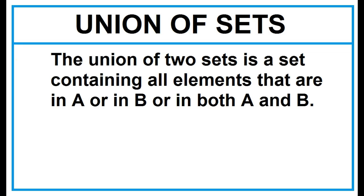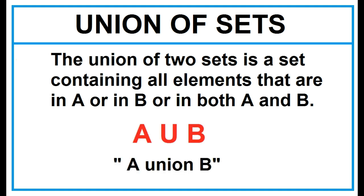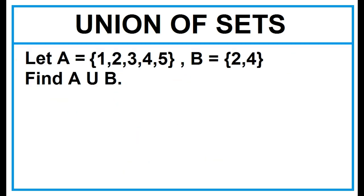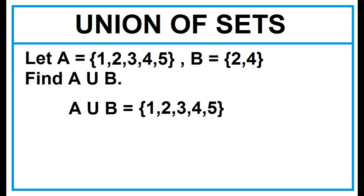Union of Sets. The union of two sets is a set containing all elements that are in A, or in B, or in both A and B. The symbol is read A Union B. Given Set A and Set B, find A Union B. Simply combine the elements of Set A and Set B without repetition.